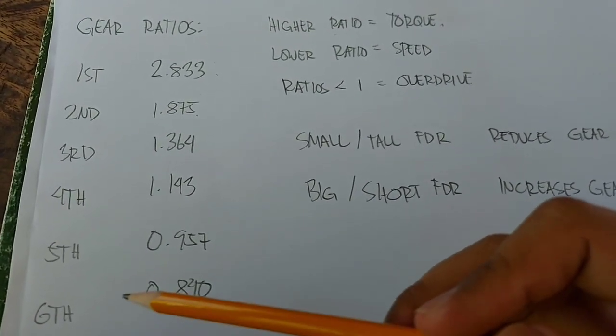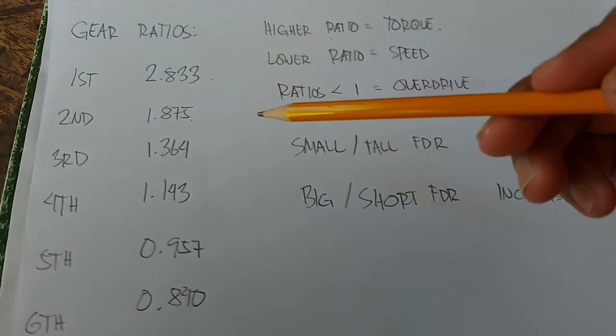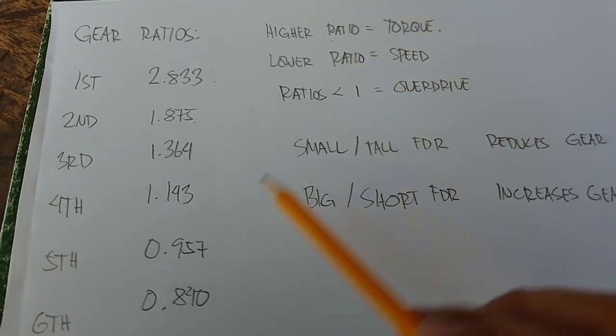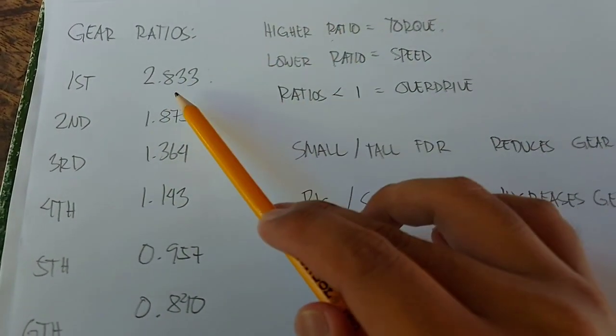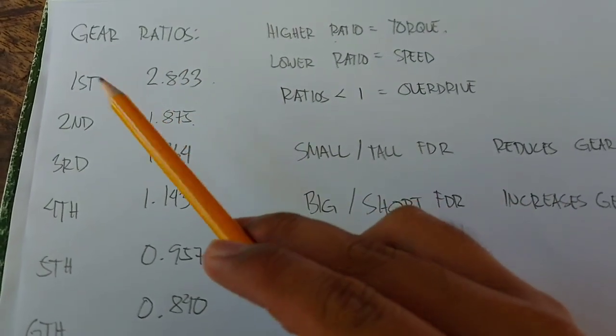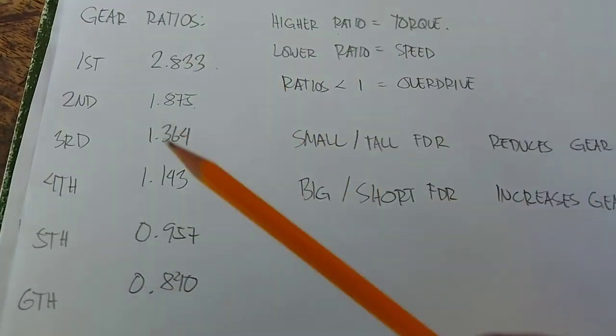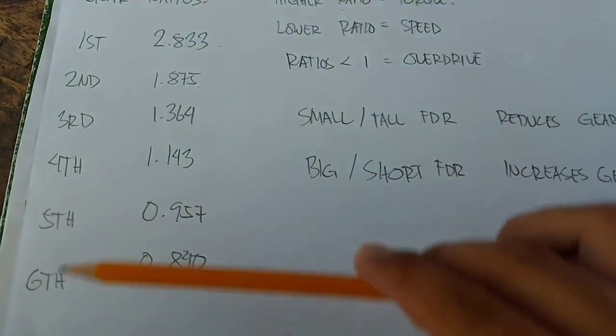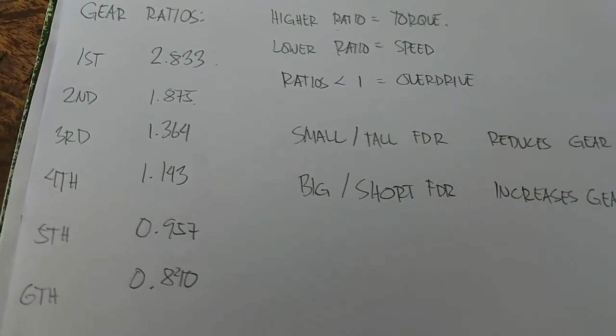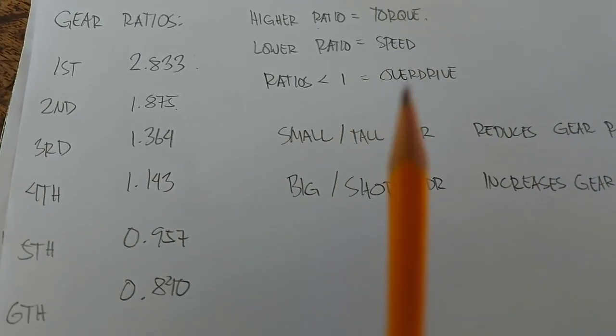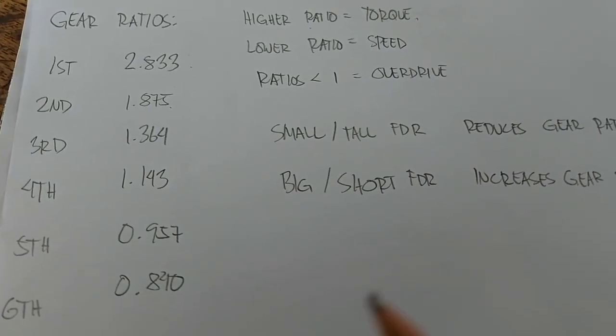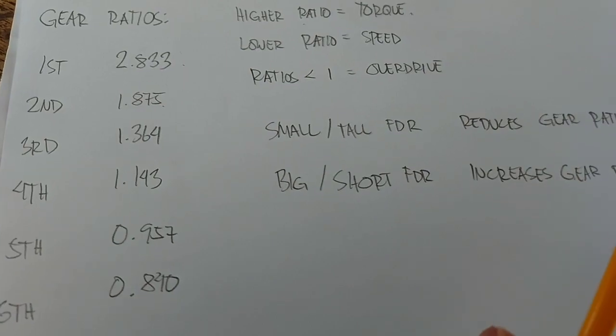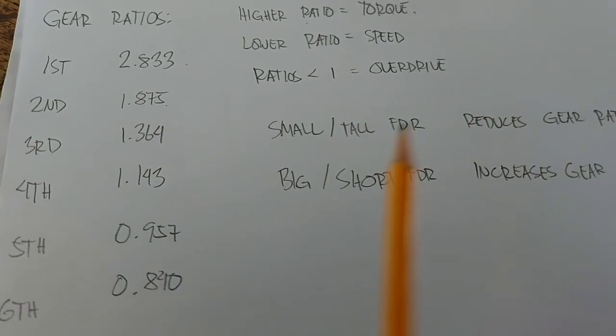You can see this if you have an analog tachometer and speedometer. When you're in short ratio gears, your RPM is higher than the speed needle. Whereas, as you go to taller gear ratio, the RPM and speed needles become level, or sometimes, the speed needle becomes higher than the RPM.